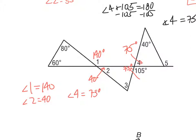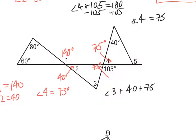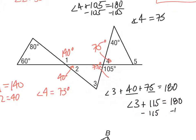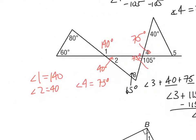Now I can set up an equation for angle 3: angle 3 plus 40 plus 75 equals 180 degrees. Combining 40 and 75 gives 115, so angle 3 plus 115 equals 180. Subtracting 115 from both sides gives angle 3 equals 65 degrees.